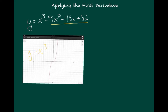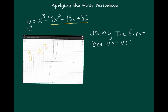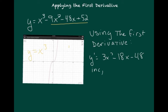Let's start using some of the tools at our disposal, beginning with the first derivative. To analyze this, let's find what the first derivative is: y prime equals 3x squared minus 18x minus 48. We saw earlier that if we can determine the sign of the first derivative, we can determine where the function is increasing, decreasing, and where it's neither.